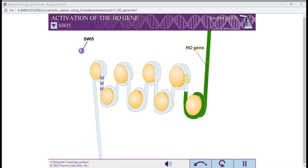SWIFI is only active in the mother cell. SWIFI binds to multiple sites more than 1000 bases from the HO promoter and cannot, therefore, activate the HO gene directly.